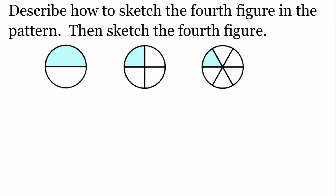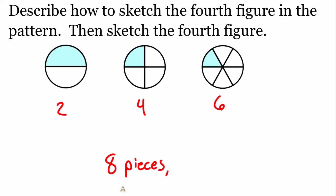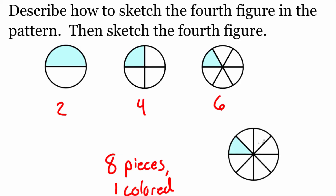So we're following a pattern here. Our first circle was two pieces with one filled in, our second circle was four pieces, and our third circle was six pieces. So my guess would be that our next circle is going to have eight pieces, with one of those pieces colored in. And if we take a look at the picture, there it is — a circle split into eight pieces with one piece filled in.